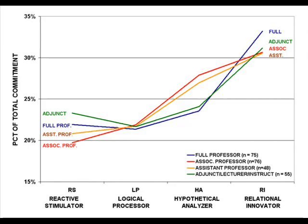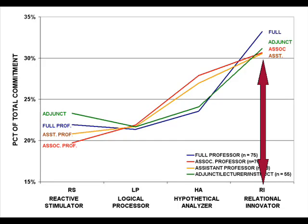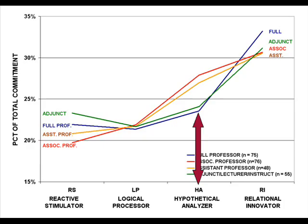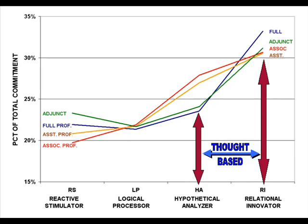What does our representative data tell us? Here is the average strength of the IOP style — a measure of information processing — for each professorial rank. The similarity in their approach jumps off the page. The average professor relies on the idea-oriented Relational Innovator, or RI style, as their principal method of navigating life. They use the Analytical Hypothetical Analyzer, or HA style, as their secondary stance.